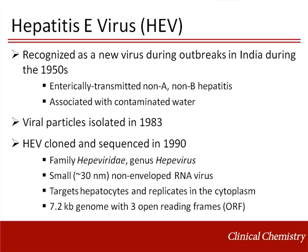Hepatitis E virus has a unique genomic structure, making it the only member of the family Hepaviridae and the only member of the genus Hepatitis E. It is a small, non-enveloped, positive-sense RNA virus that targets hepatocytes and replicates in their cytoplasm.